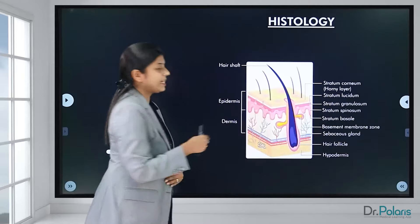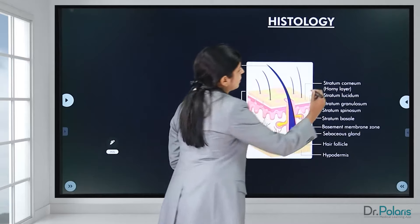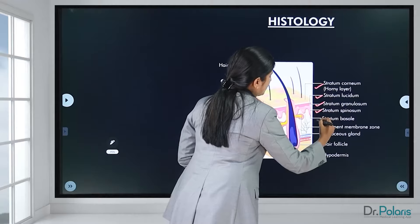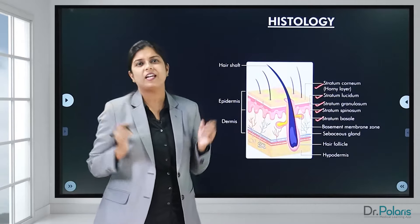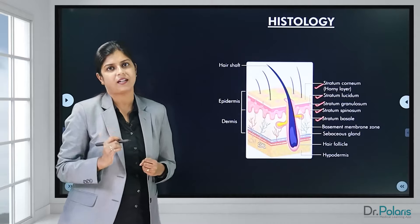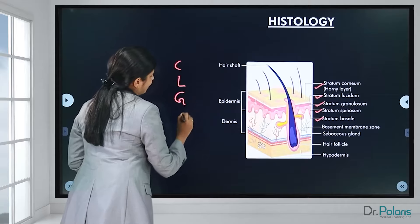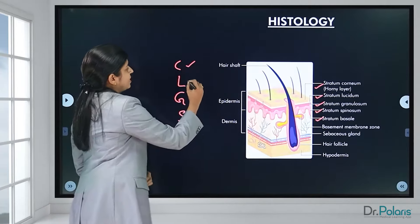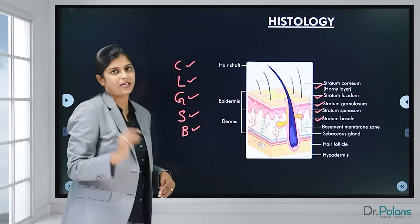There are five layers of the epidermis: stratum corneum, stratum lucidum, stratum granulosum, stratum spinosum, and stratum basale. There is a simple mnemonic to remember these layers: 'Come, let's get sun burnt' — for stratum Corneum, stratum Lucidum, stratum Granulosum, stratum Spinosum, and stratum Basale.